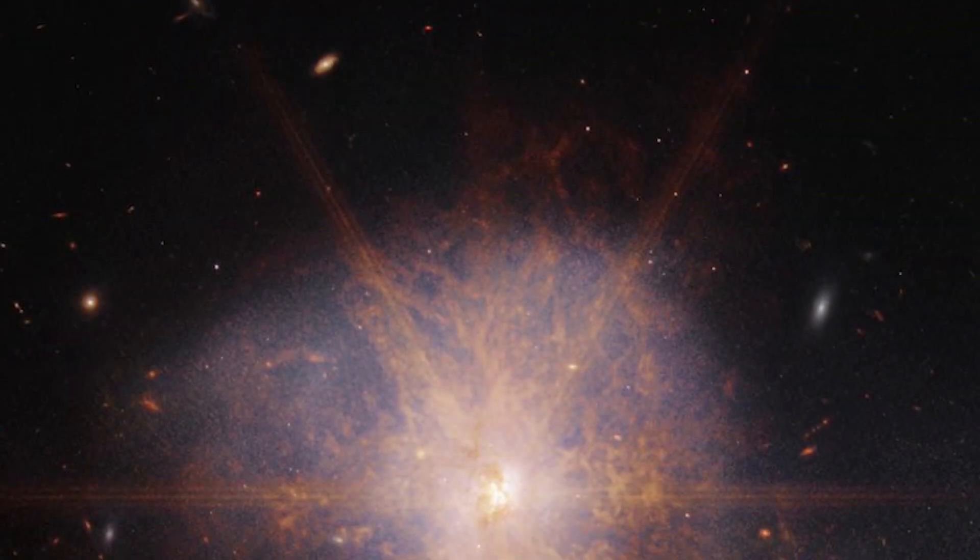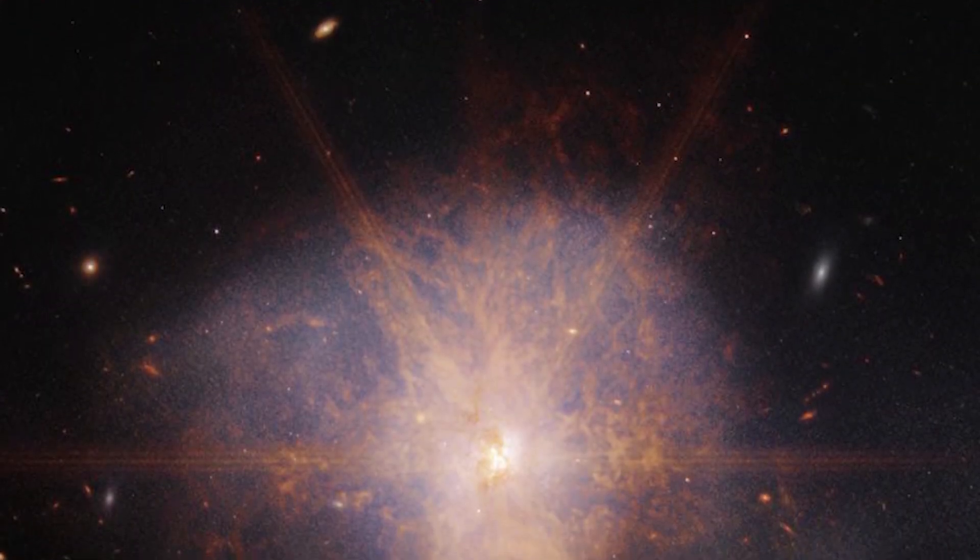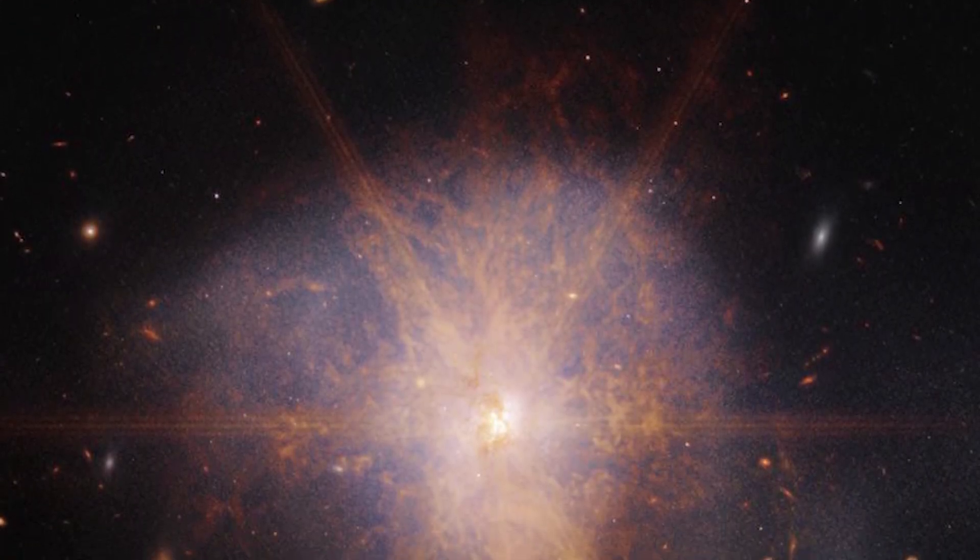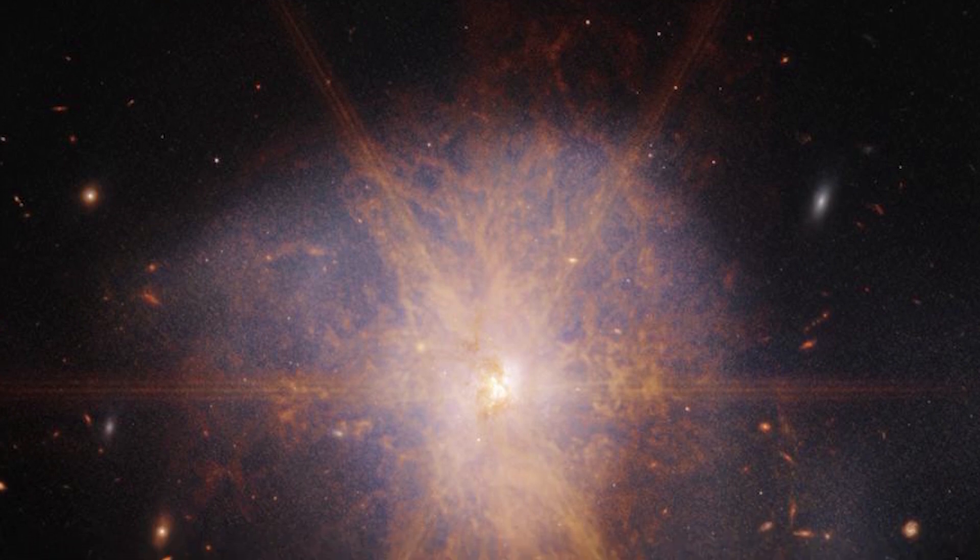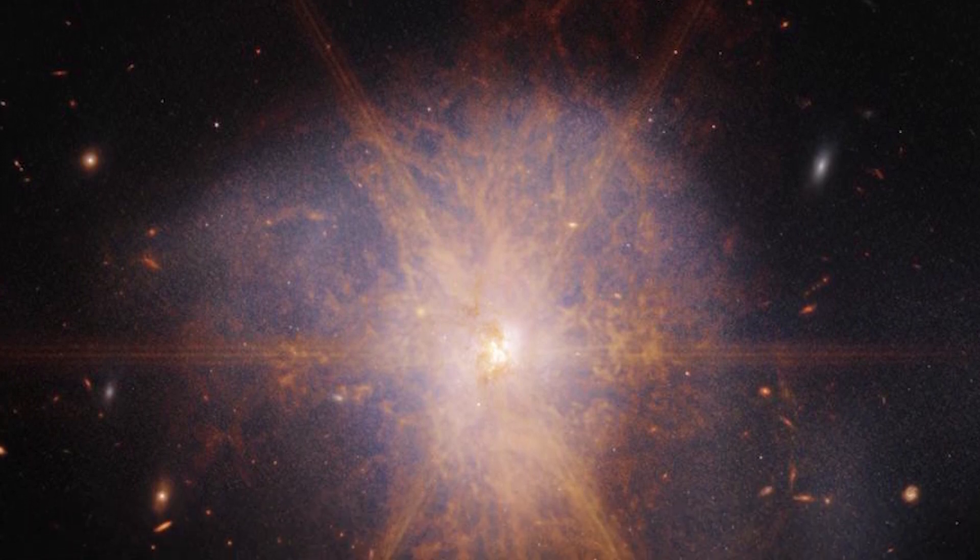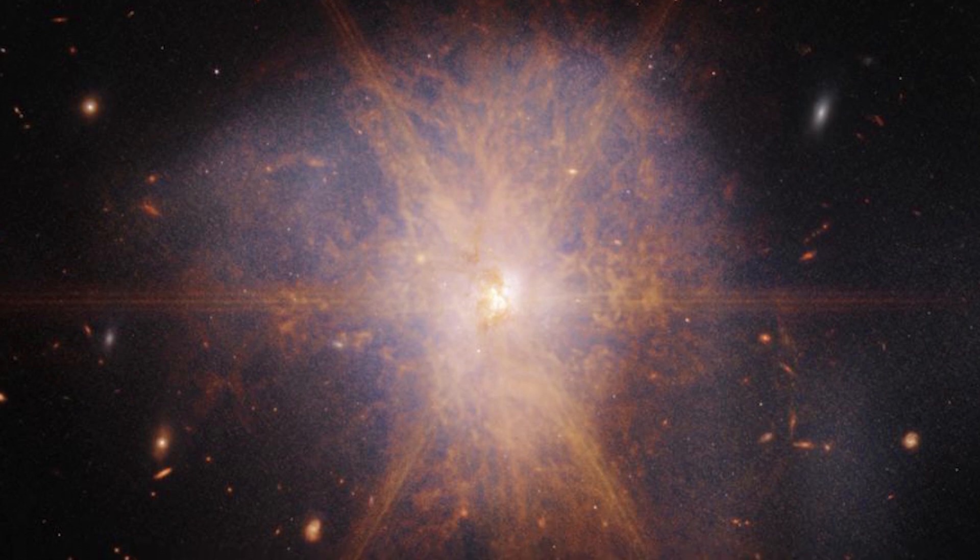The latest views from the James Webb Space Telescope show an impressive galactic merger of the two galaxies. This image also shows faint tidal tails extending from the outskirts of the merger, indicating the gravitational pull between the two galaxies.